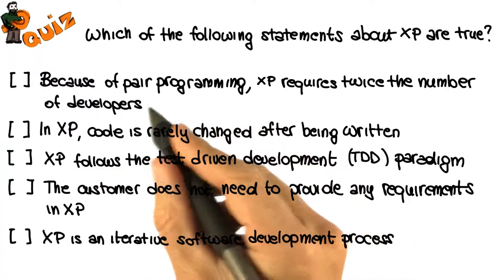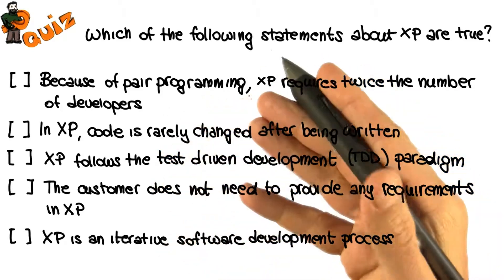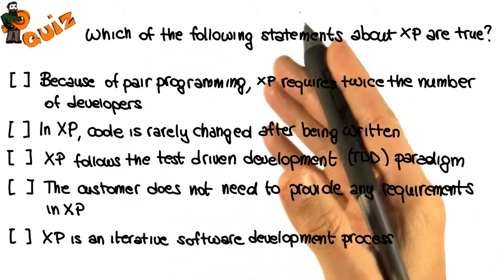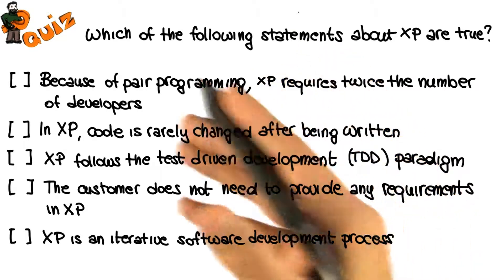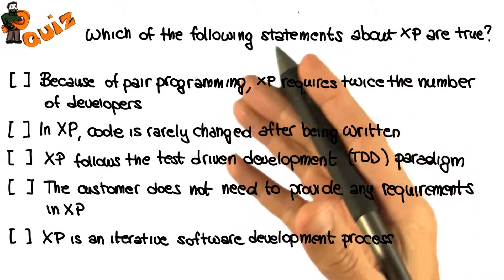The first statement is false. It is not true that because of pair programming we need twice as many developers. In fact, there is some evidence that even though in pair programming we have two developers working together, the overall efficiency of the programmers is not really affected by the use of this practice.